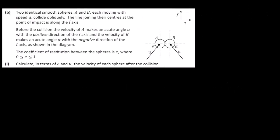Part B: Two identical smooth spheres A and B, each moving with speed U, collide obliquely. The line joining their centres at impact is along the i-axis. Before the collision, the velocity of A makes an acute angle alpha with the positive i-axis direction, and B makes an acute angle alpha with the negative i-axis direction. The coefficient of restitution is E, where 0 < E < 1.